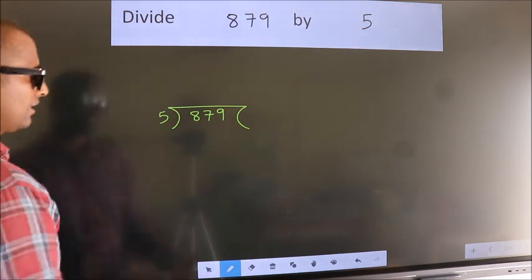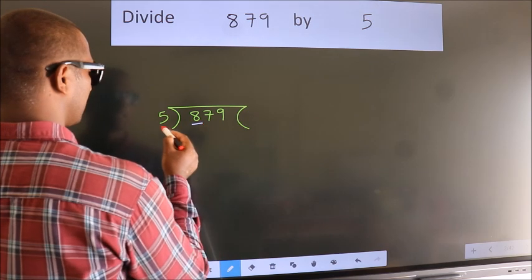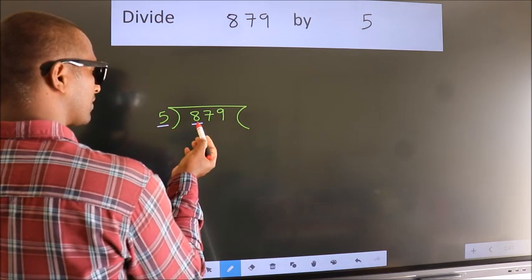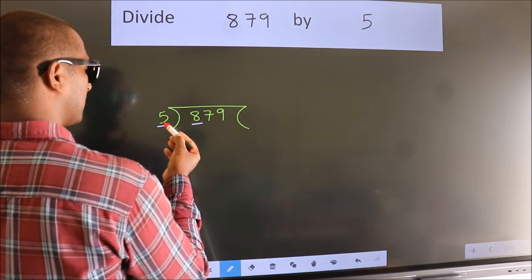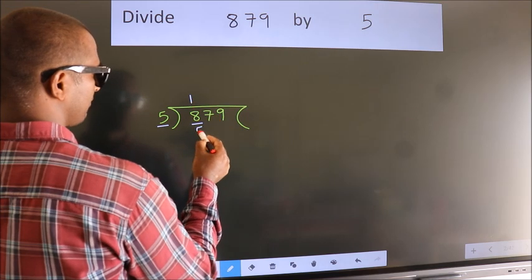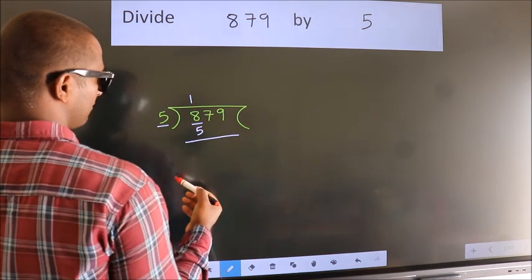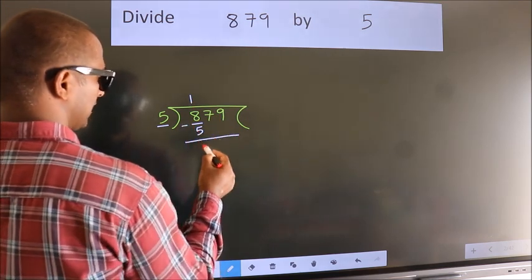Next, here we have 8, here 5. A number close to 8 in the 5 table is 5 once 5. Now we should subtract. We get 3.